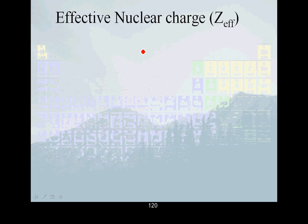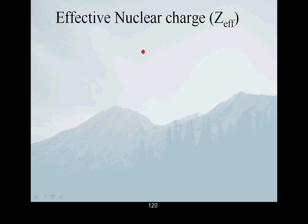So it turns out what's going to dictate where these electrons are and how hard they are to remove is a concept called effective nuclear charge. We can define actual nuclear charge, usually given the symbol Z, which is just the number of protons in the nucleus.